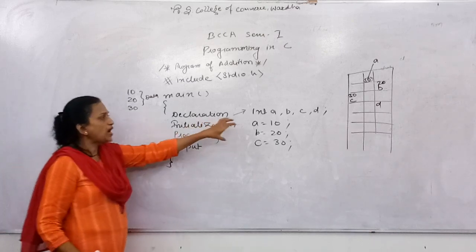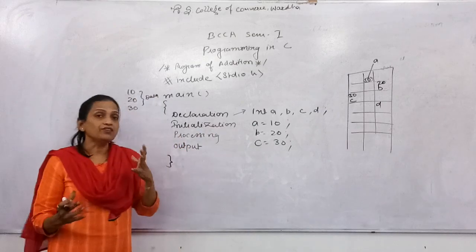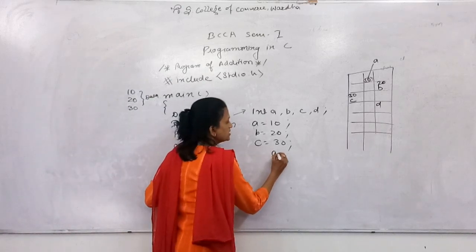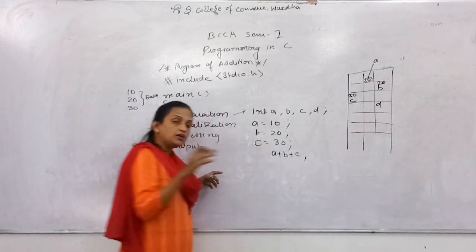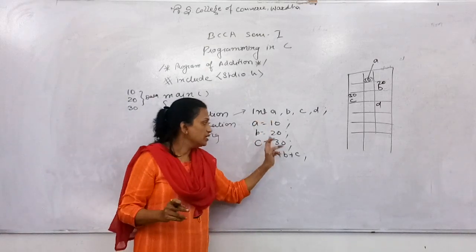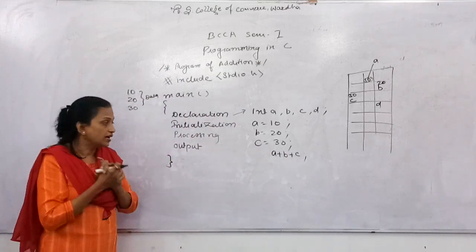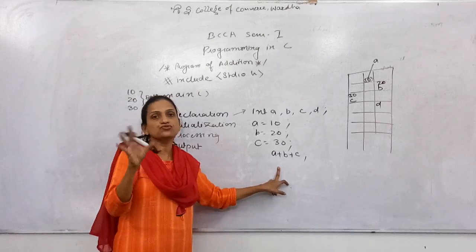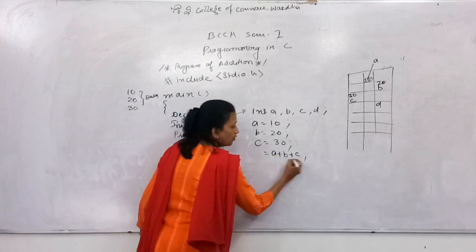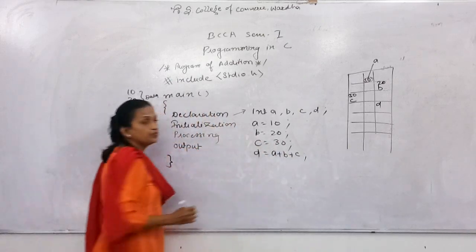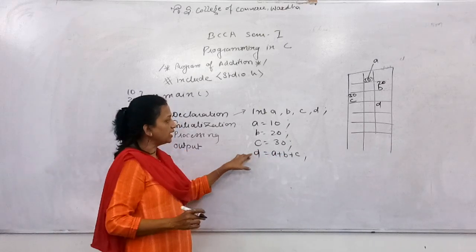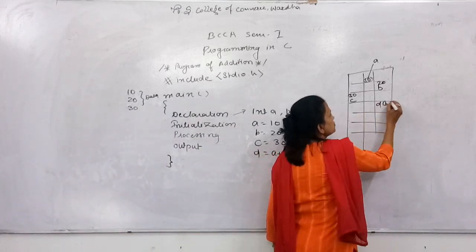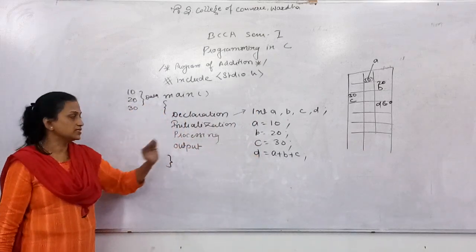Now what is processing? When you process the data, here the processing is A plus B plus C. The compiler takes the value of A, the value of B, the value of C, adds them, and makes a sum. Because the plus sign is the arithmetic operation used for addition. Whatever result comes, you store it in D. So the result is 10 plus 20 is 30, and 30 plus 30 is 60 — so 60 will be stored at the place of D.